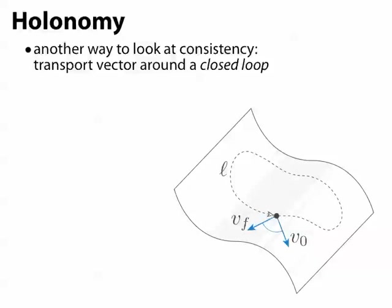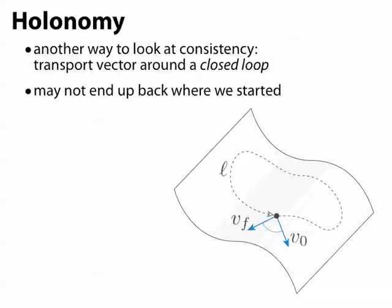In general, it's not going to end up back where it started. We call this difference in angle between the initial and final vector the holonomy of the connection around that loop.